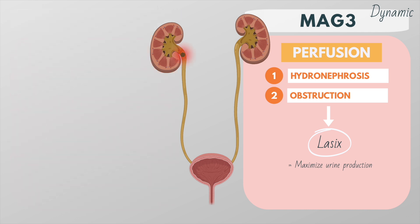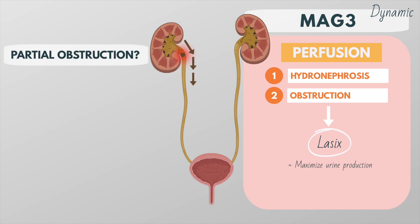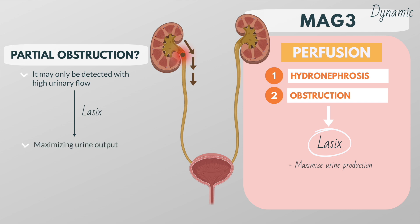Unless the obstruction is complete, there will be some kind of drainage. If there is a partial obstruction, it may only be detected with high urine flow, so Lasix helps to demonstrate partial obstruction by maximizing urine output. This type of scan can also be used before kidney transplantation to assess the vascularity of the kidney to be transplanted, or for diagnosis of complications in the recipient after transplantation.